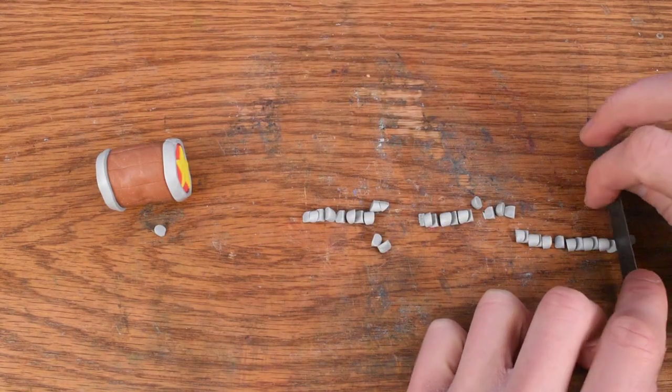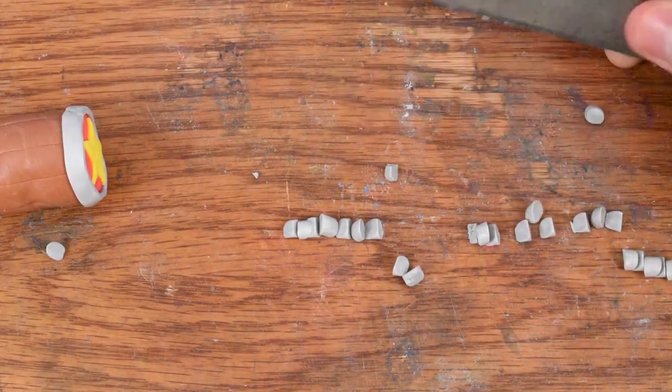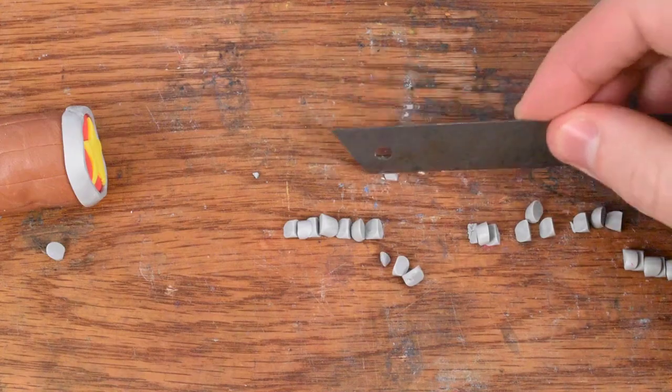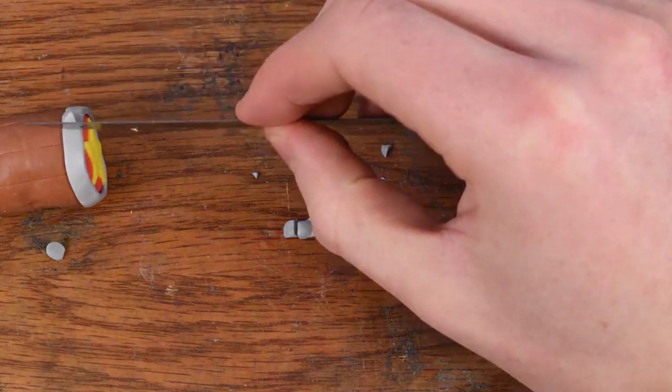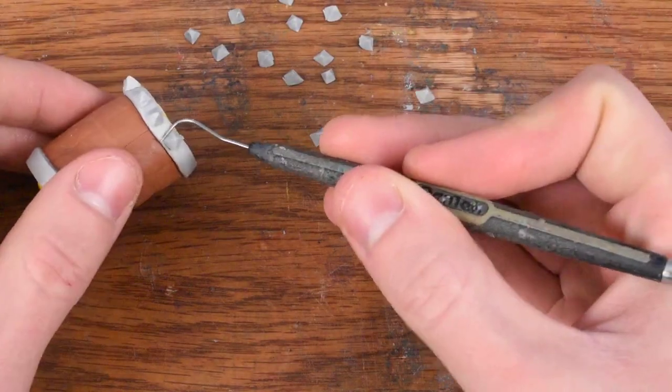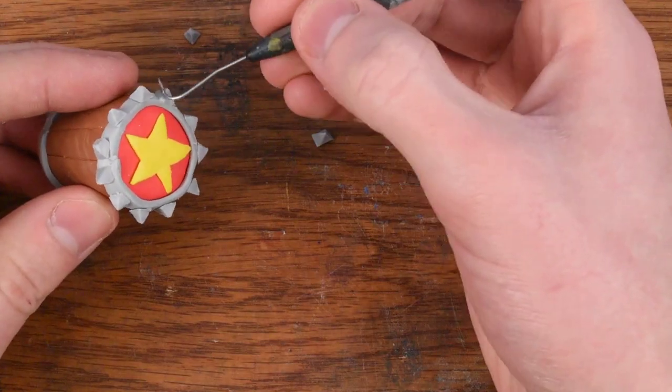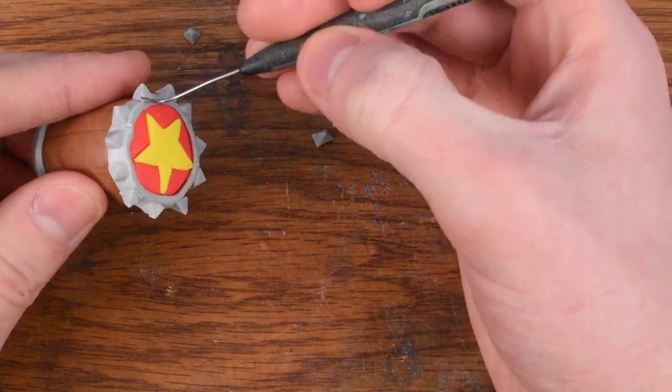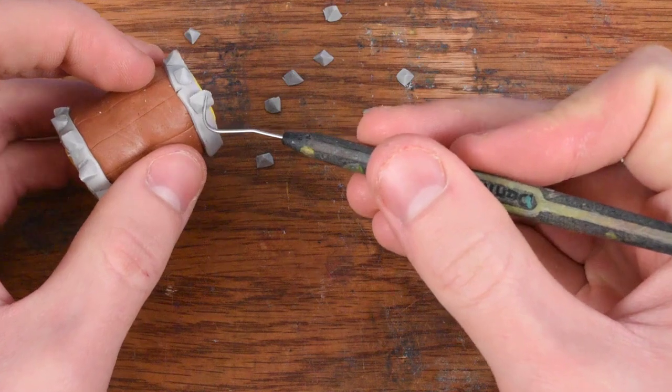And now we can create these spikes across the whole thing. I always create a bunch extra than what I'm actually going to need, because I always end up cutting them wrong, or when I place them on, I smash them, or something like that. So we can place these all the way around and sort of blend them in as we go around it.